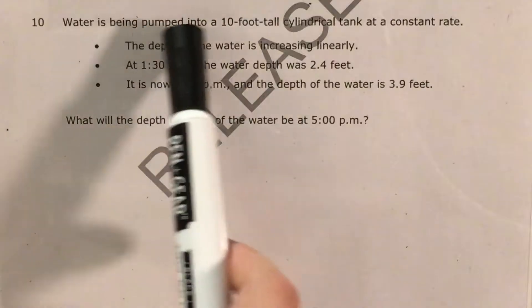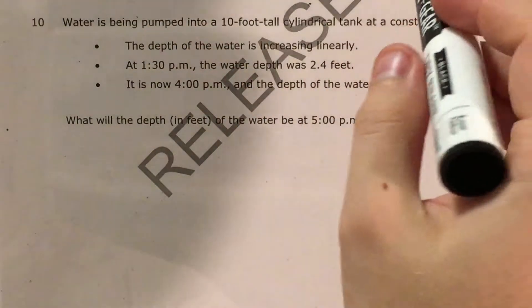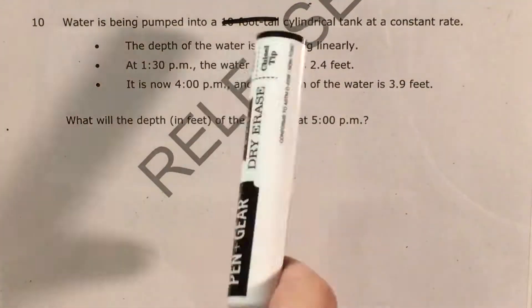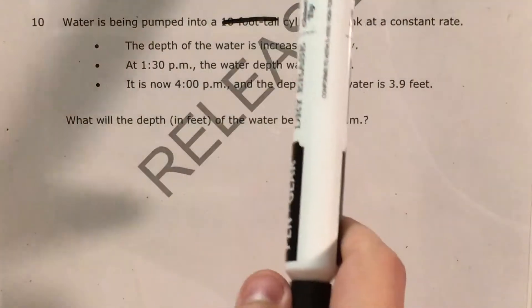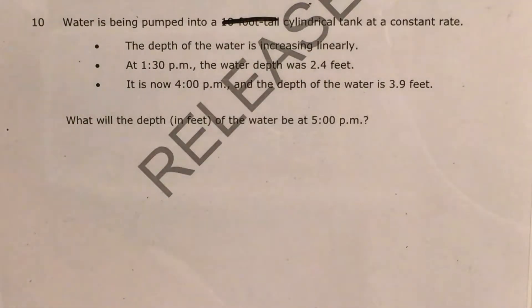The question tells us that water is being pumped into a cylindrical tank at a constant rate. I'm going to go ahead and say right off the bat, the 10 foot tall thing is probably not going to matter. We know that the depth of the water is increasing linearly and we have different times and different depths and we're supposed to figure out what the depth is going to be at 5 p.m. Now the big skill that this question is going to test is your ability to recognize and find rate of change from a word problem.